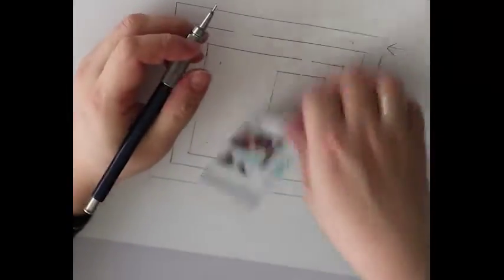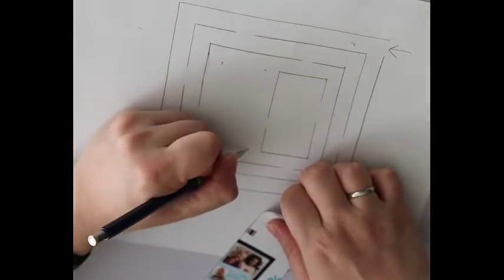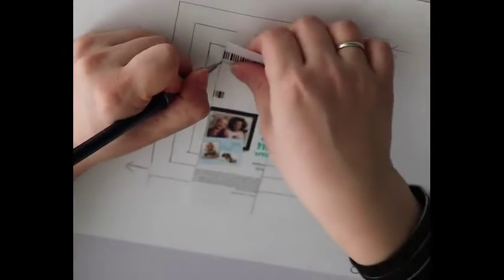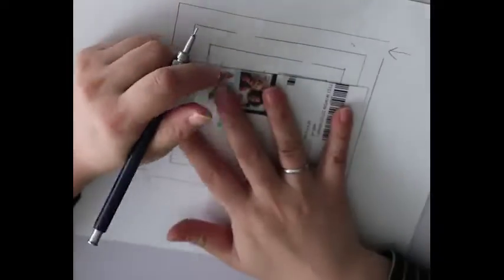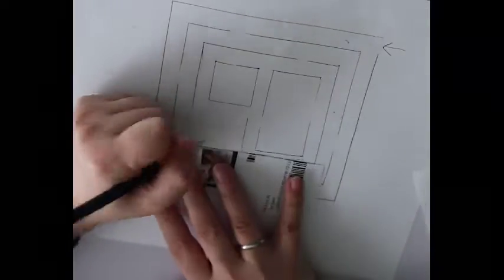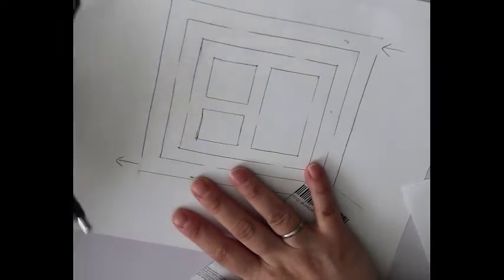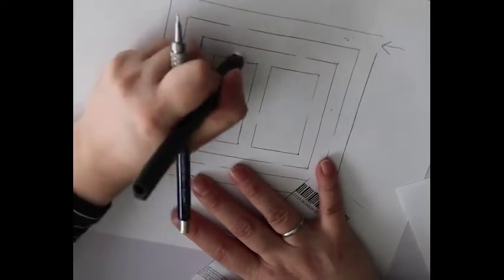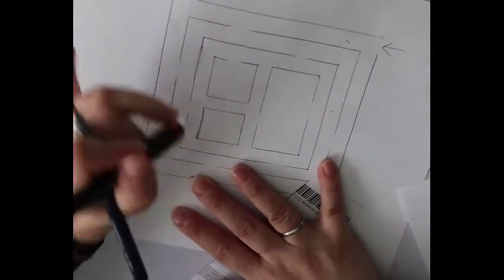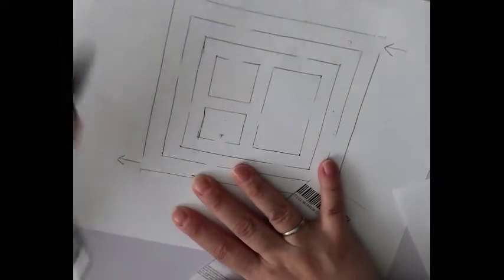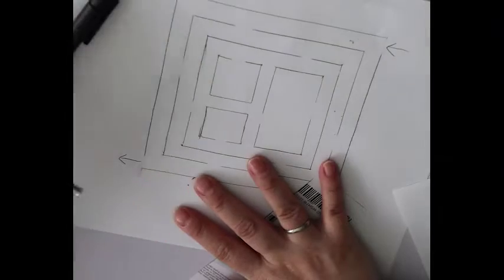And then I'm going to draw maybe two squares in here. Fill this space with two squares. It's more like a rectangle. Alright, so then I'm going to erase some part of this to make some paths for the maze.